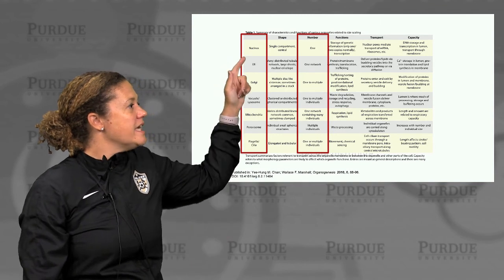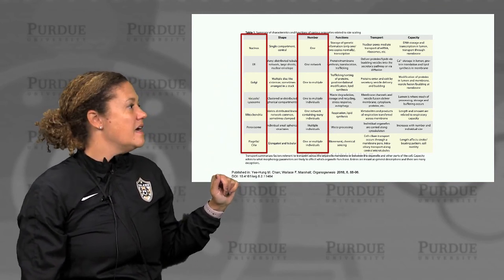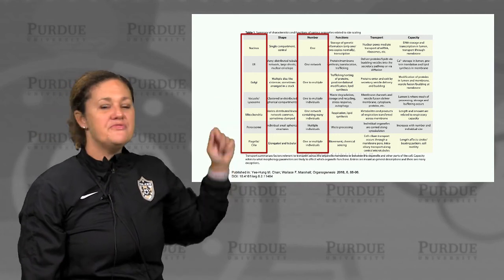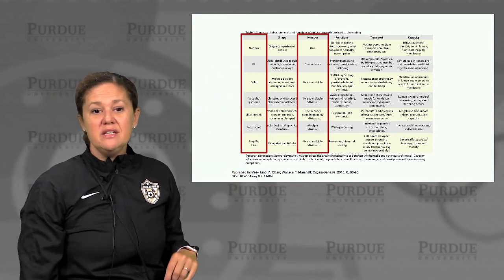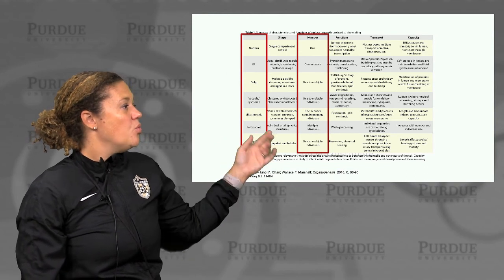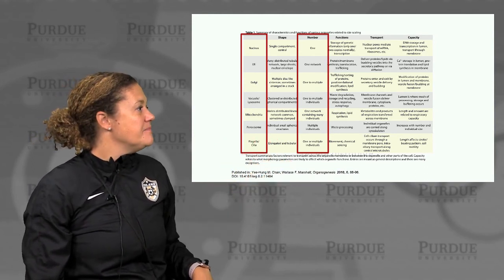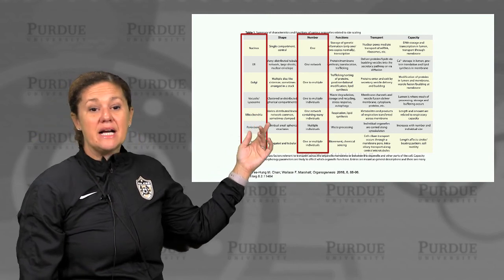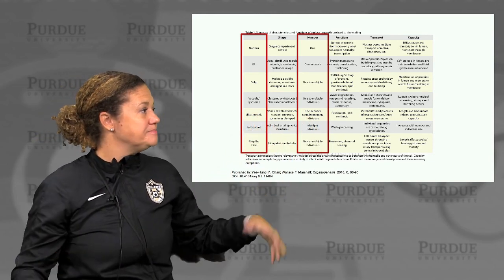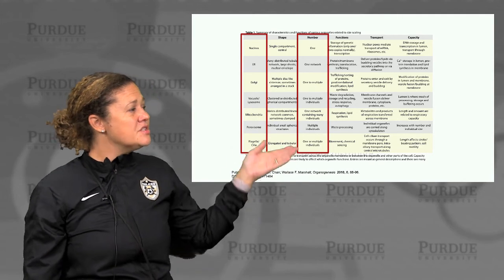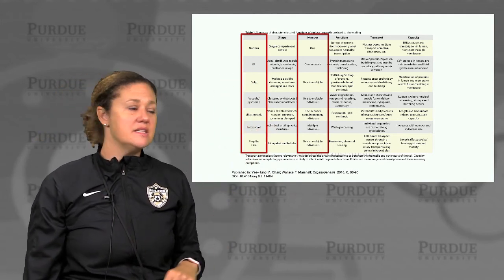If we look at some of the various organelles inside cells, they can vary quite a bit in their number — from one, such as a nucleus, to one or many, like flagella or cilia. A cell can have many mitochondria that are connected quite commonly in one network. So the question is, how do cells control and regulate this number?